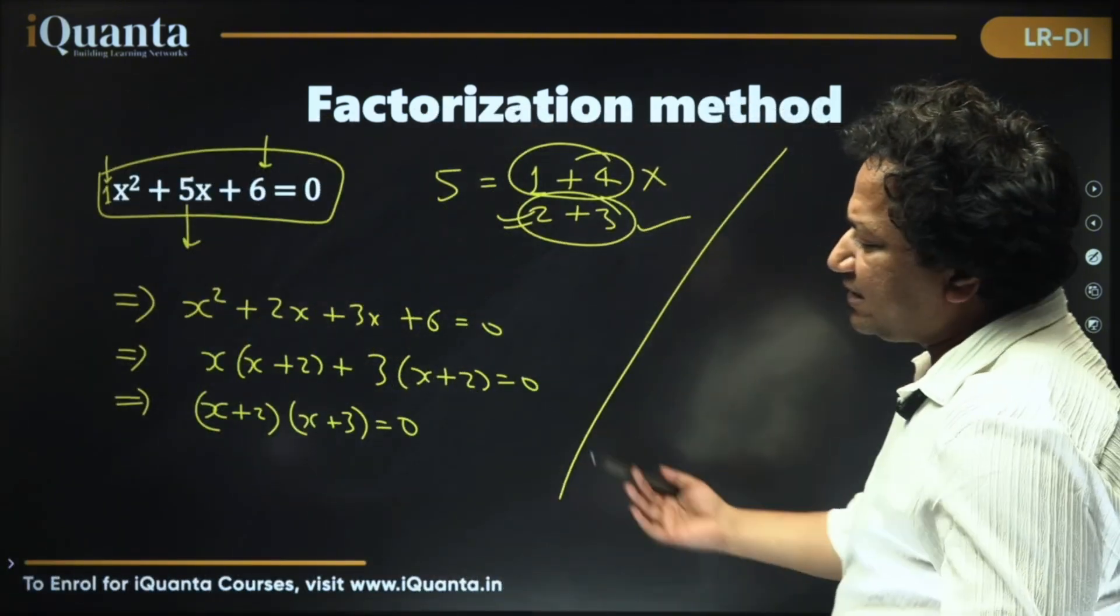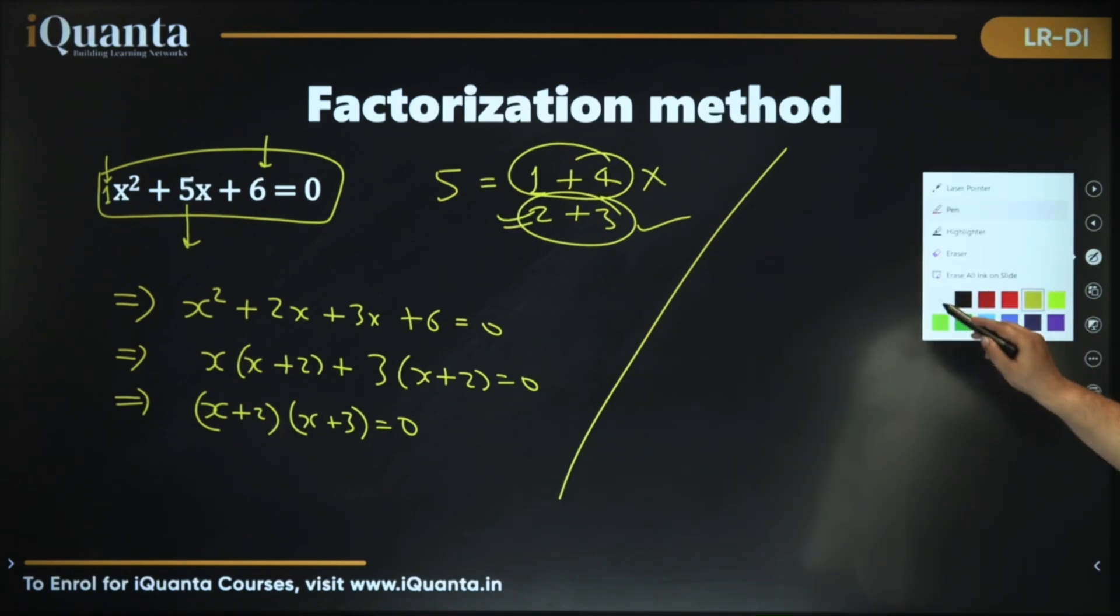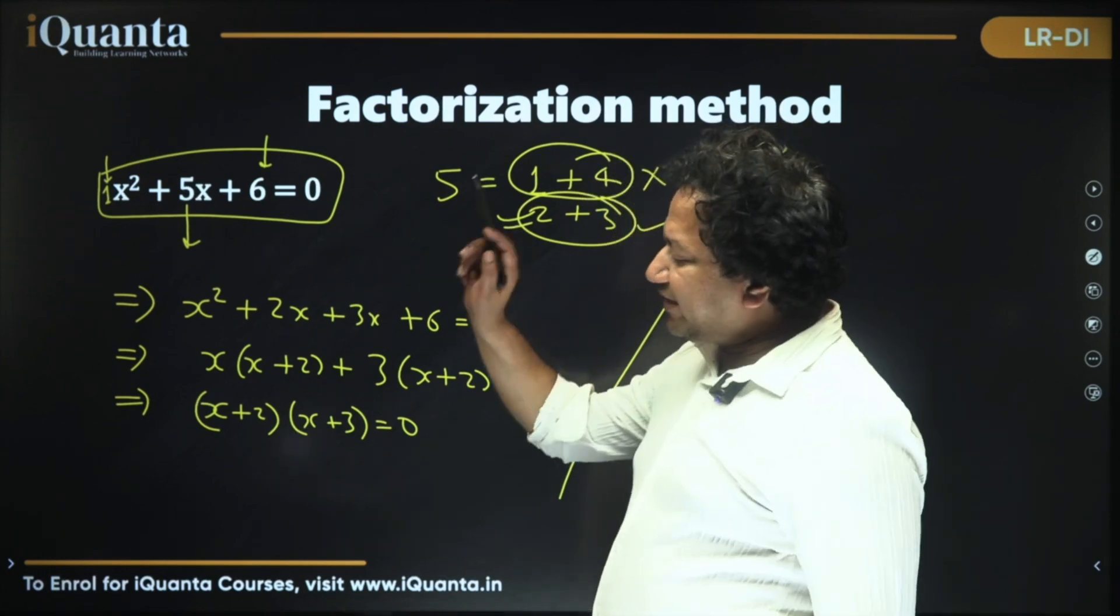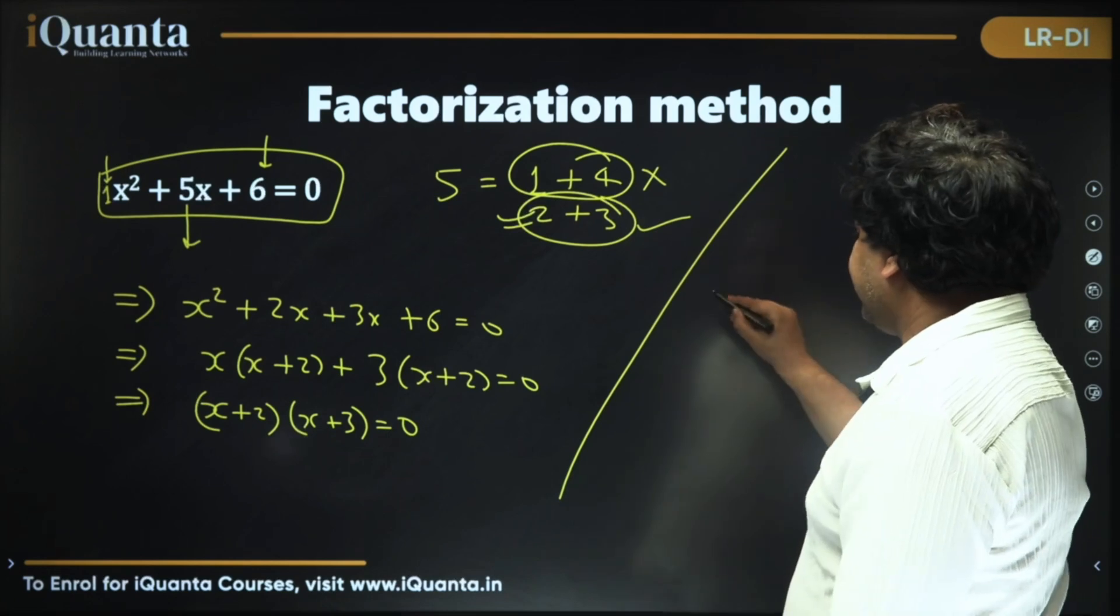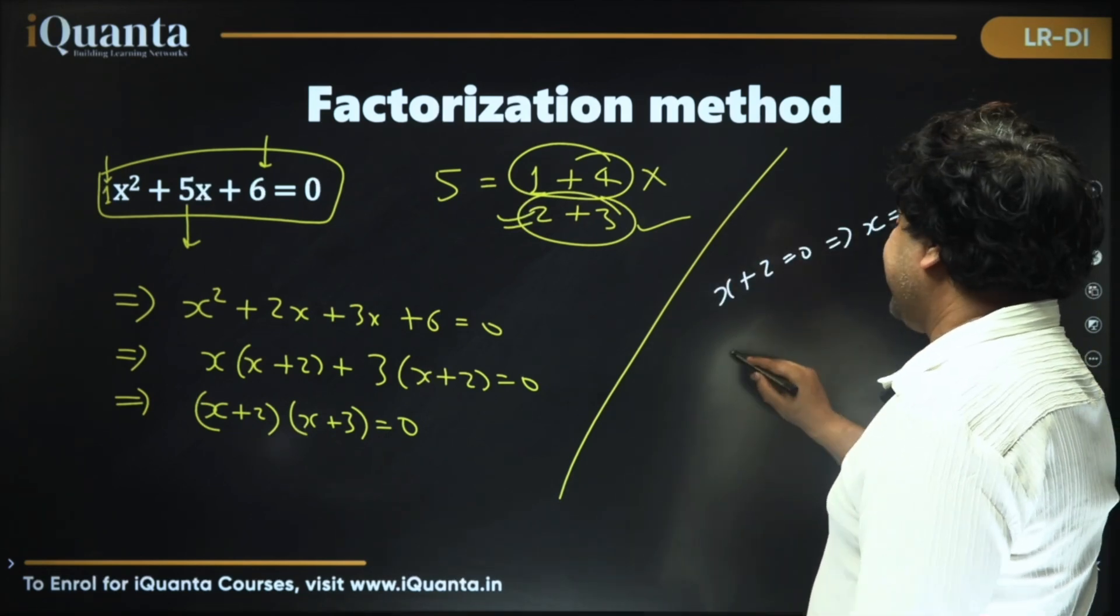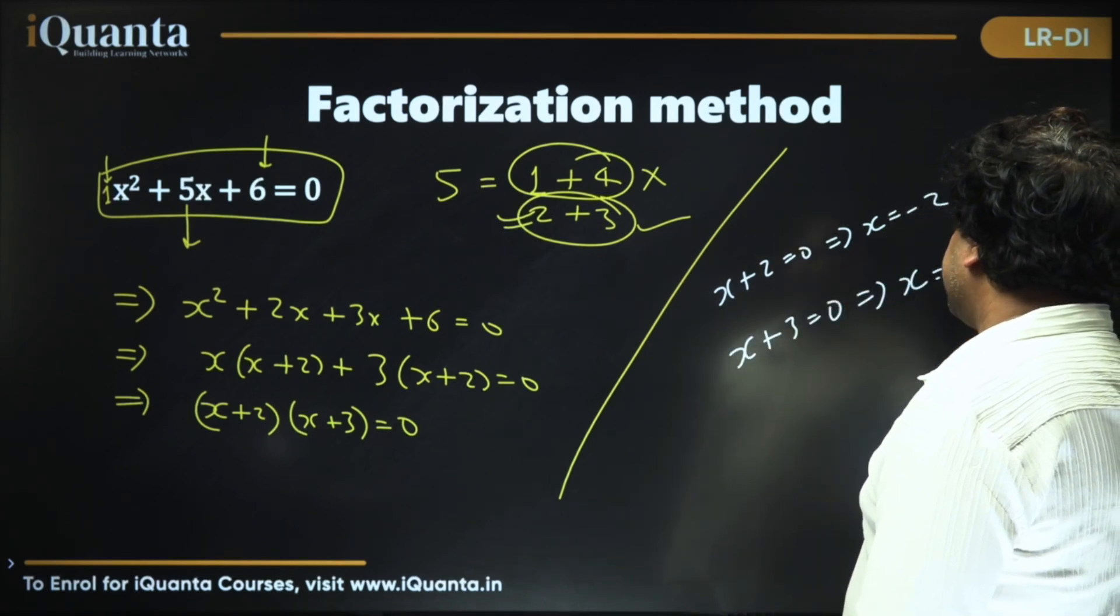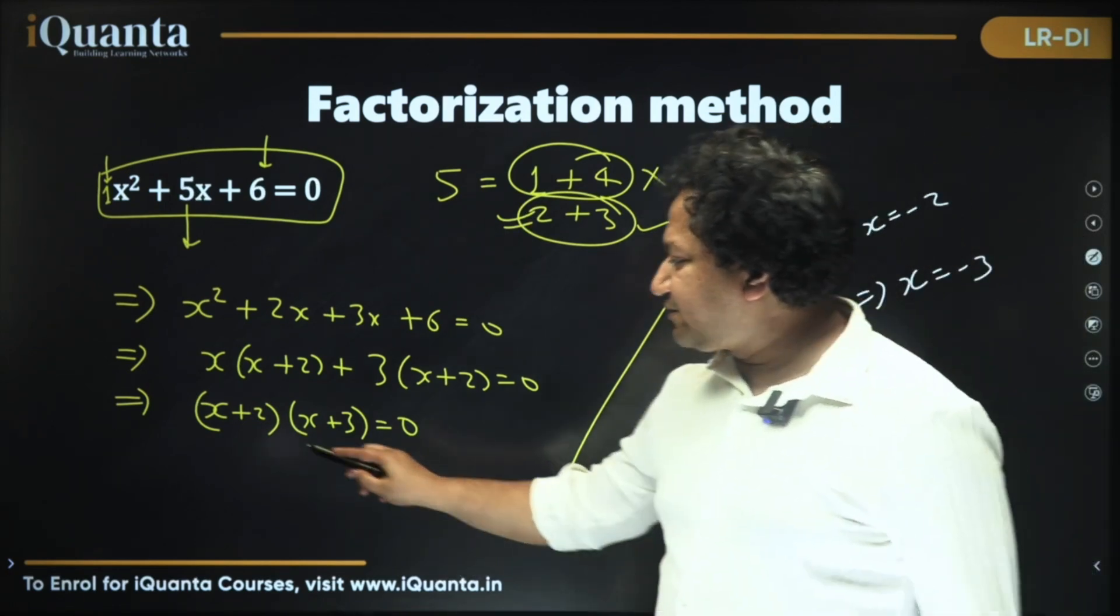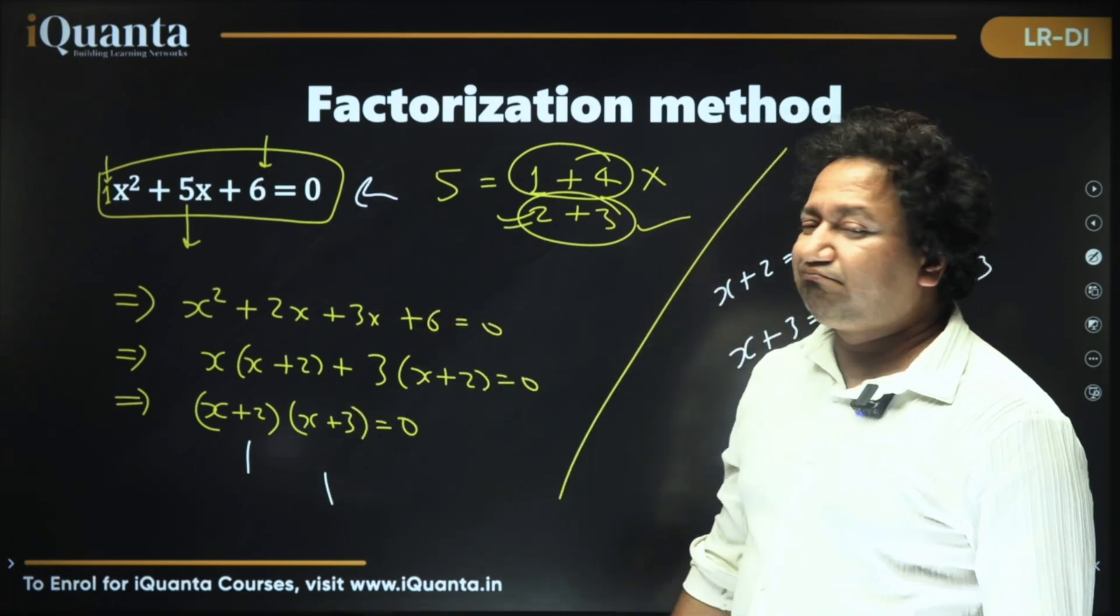Now our life becomes simple. Life becomes easy. This means product of x + 2 and x + 3 is equal to 0. That means either this is 0 or this is 0 or both are 0s. So when x + 2 is 0, this means x = -2. And when x + 3 = 0, that means x = -3. So basically -2 and -3 are the roots. And the factors are x + 2 and x + 3 of this equation. Easy.